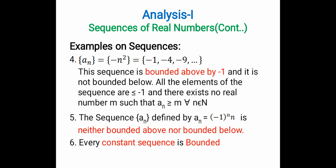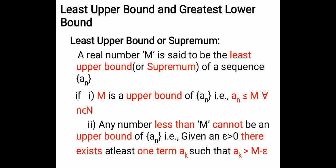Next we shall discuss what is least upper bound (LUB) and what is greatest lower bound (GLB). Least upper bound is also known as supremum.